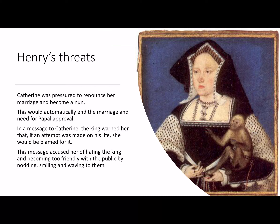Huge pressure was placed on Catherine to renounce her marriage and become a nun. This would automatically terminate the marriage and so avoid the need for the Pope's approval. In one message sent to Catherine, the King warned her that if an attempt was made on his life, she would be blamed for it. The message accused her of hating the King and becoming too friendly with the public by nodding, smiling and waving at them.